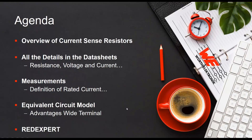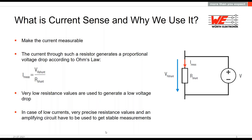We will have a short overview about the current sense resistor itself, about the basics, and go further into all the details in the datasheet like resistance, voltage, current, temperature coefficient, derating curve, and so on. The measurements have a big impact on the provided data, so we will have a look at how the data is obtained. We will have a close look at the definition especially for the rated current. Of course in every application there is some kind of frequency. We have to deal with real components, and resistors have some frequency behavior too, so we will have a closer look at the equivalent circuit model. And last but not least, we will have a short look at our RED Expert.